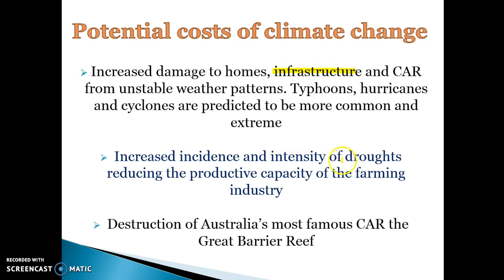Climate change can also increase the intensity of droughts and reduce the productive capacity of our economy. When firms experience droughts and floods, that reduces their productive capacity and can hurt living standards by reducing GDP and overall income per person. It can also lead to the destruction of the Great Barrier Reef, which is an example of a common access resource — everyone has access to it, and it's rivalrous because our production is bleaching and harming it.